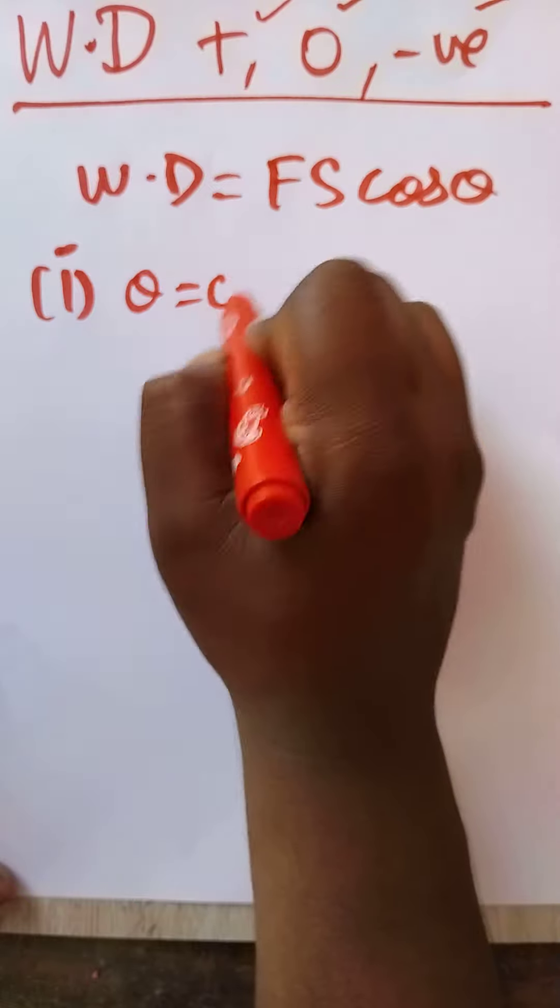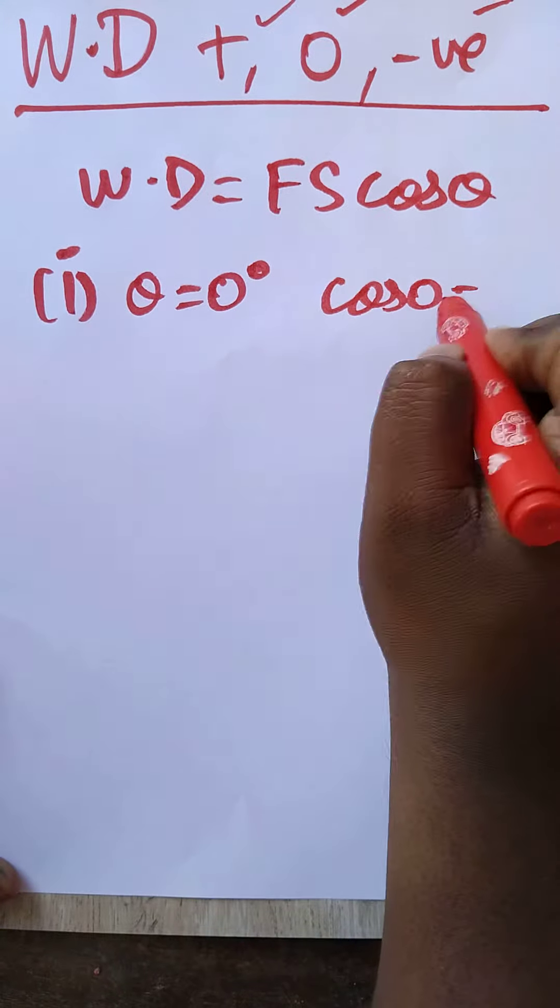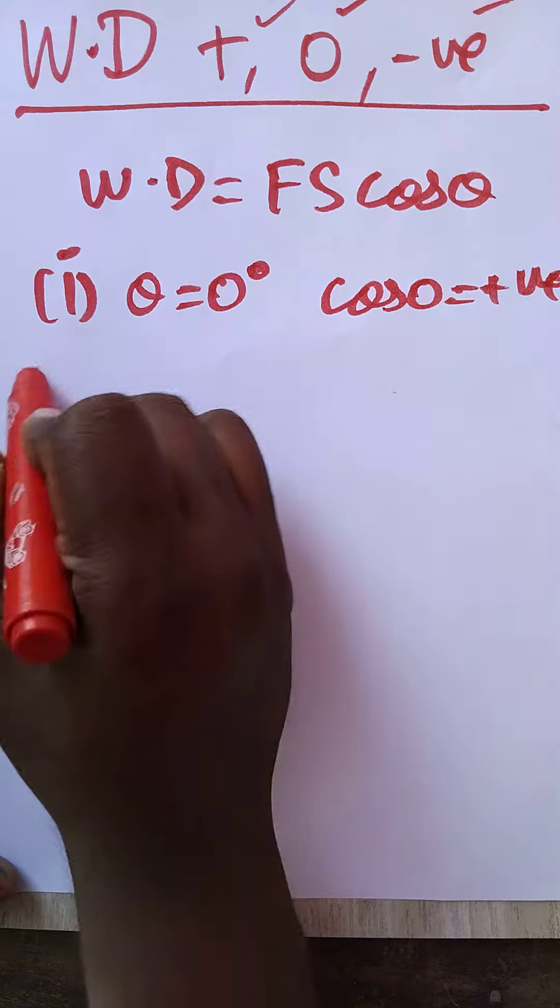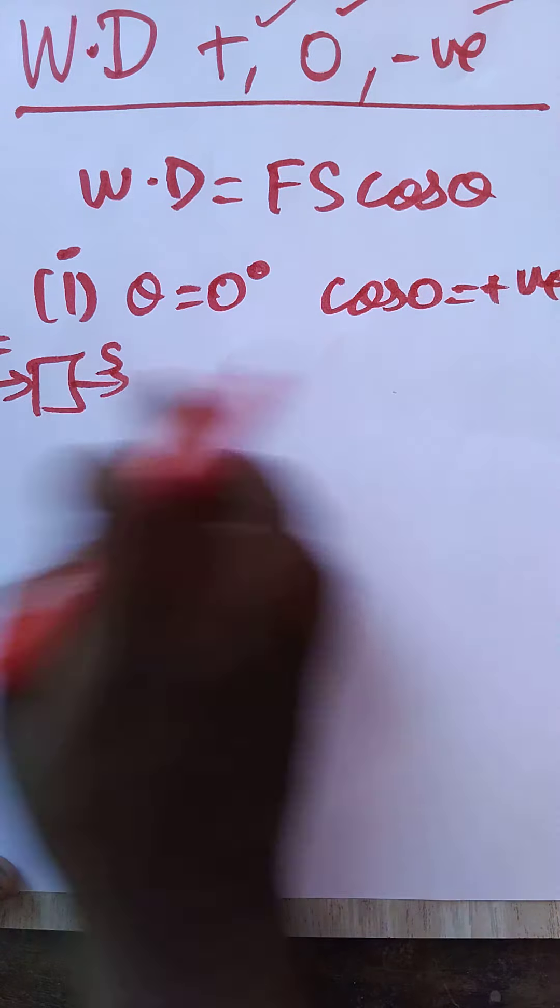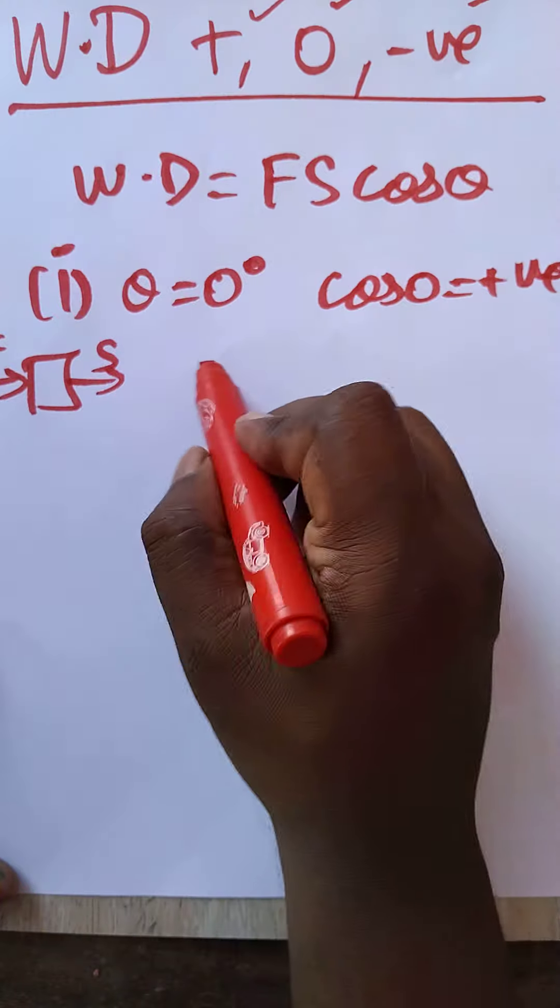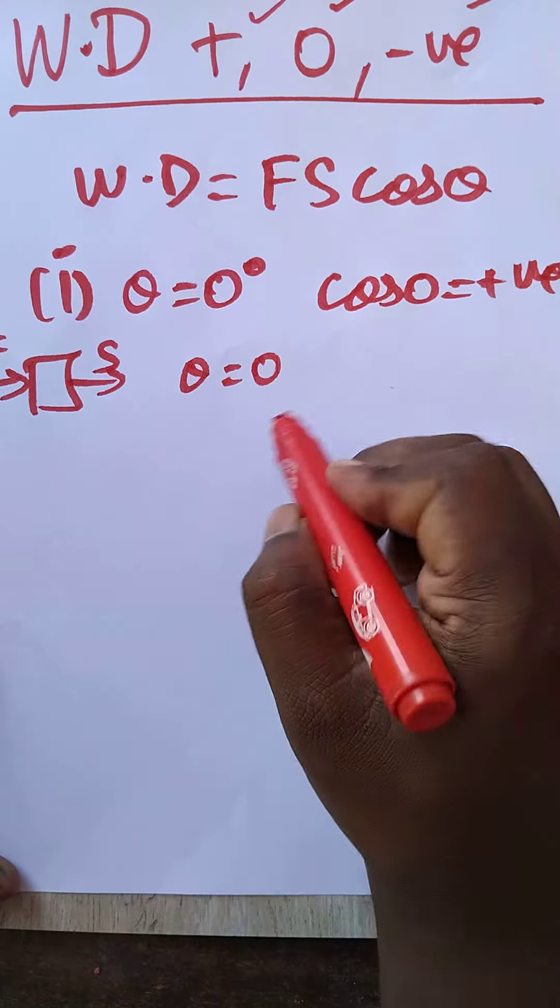First condition: theta will be zero degrees, cos zero is plus one. Example of cos zero: force applied this side, displacement also this side. There is no angle, theta will be zero degrees. This is positive work done, so work done is equal to only FS.